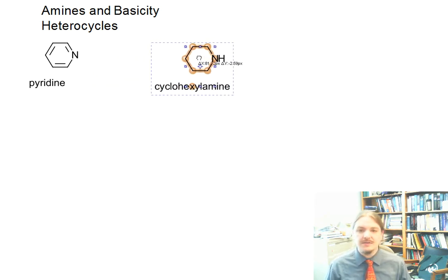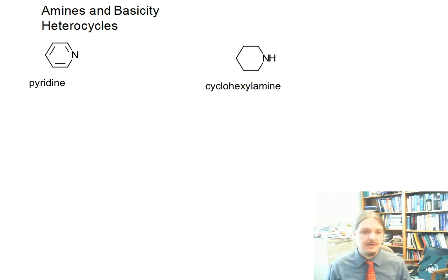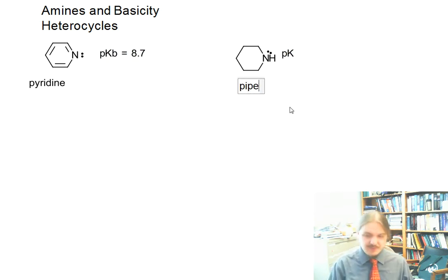Both cyclohexylamine and pyridine have delocalized lone pairs, but they are different molecules. Pyridine has a pKB of 8.7, and I shared in an earlier video that this isn't cyclohexylamine, sorry. This is pyridine.